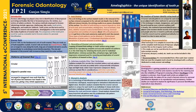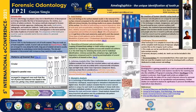Enamel rods are the fundamental units of tooth enamel. They are made up of hydroxyapatite crystals. They are also known as enamel prisms. They are arranged in rows along the long axis of the enamel rod and are usually perpendicular to the underlying enamel-dentine junction. The size and diameter of the enamel rod increase as they reach the outer surface.